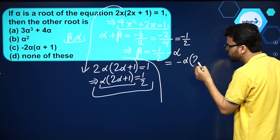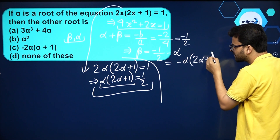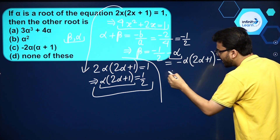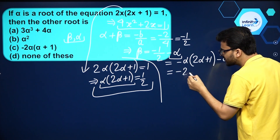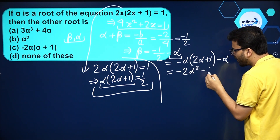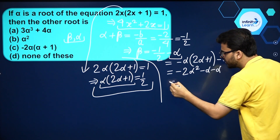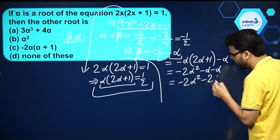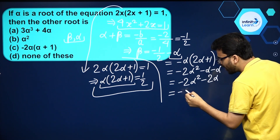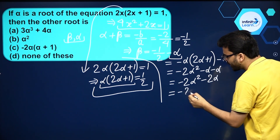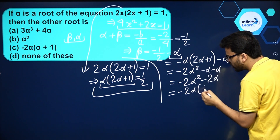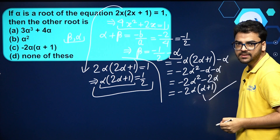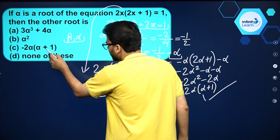So beta can be written as α(2α + 1) minus α. Opening up the bracket: minus 2α² minus α minus α, which simplifies to minus 2α² minus 2α. Taking minus 2α as common, we get minus 2α(α + 1). So the third option is the correct answer.